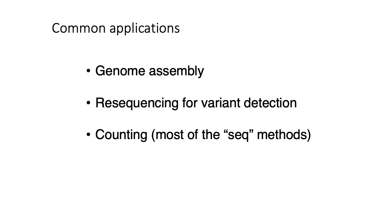The three most common applications of DNA sequencing covered in this lecture are: first, genome assembly — the process of actually sequencing the genome of an organism; second, re-sequencing for variant detection — for well-studied organisms like humans, where there is a lot of sequence variation between individuals, re-sequencing identifies what sequence variants are present for a given individual when a reference genome already exists.